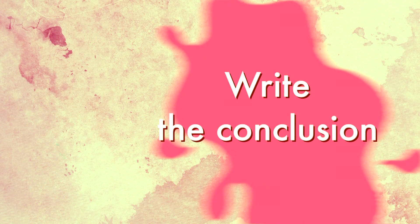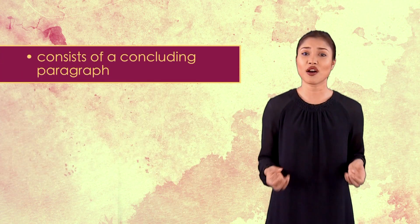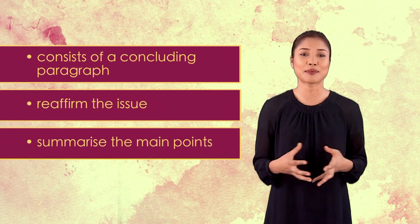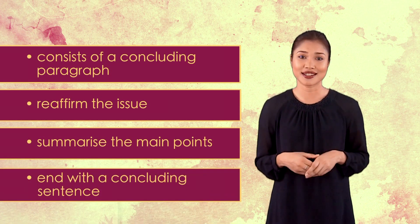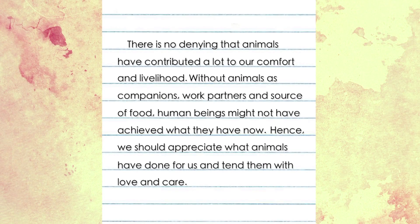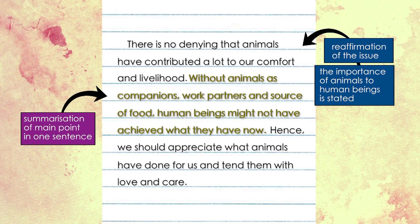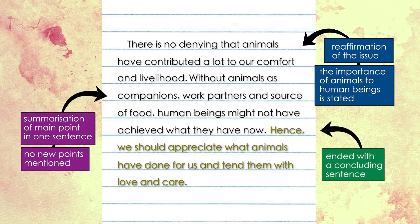Write the conclusion. The conclusion consists of a concluding paragraph. All you need to do is reaffirm the issue and summarize the main points, then end with a concluding sentence. Here is an example of my concluding paragraph. Notice how I have reaffirmed the issue — I have stated the importance of animals to human beings. Here, I have briefly summarized the main points in one sentence without mentioning any new points. Finally, I ended with a concluding sentence. So the essay is now complete.